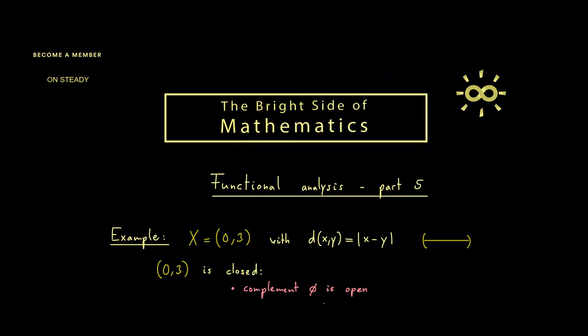Or you can use the fact from the last video where you consider any convergent sequence with members from the subset. Being a convergent sequence means it has a limit which we call x tilde, and of course it has to lie in X.